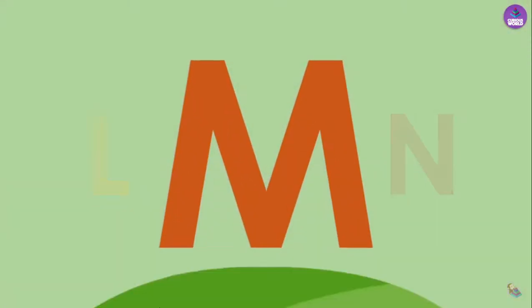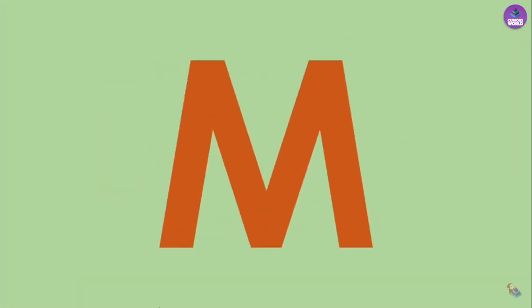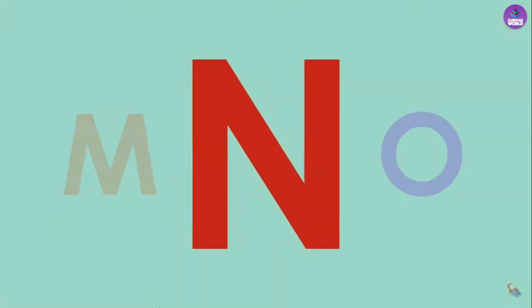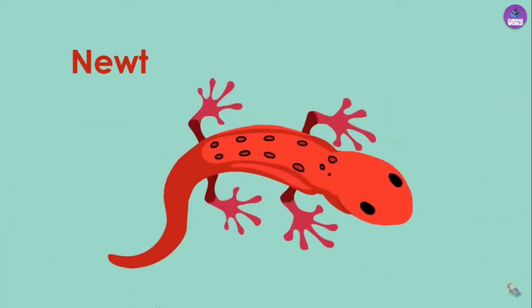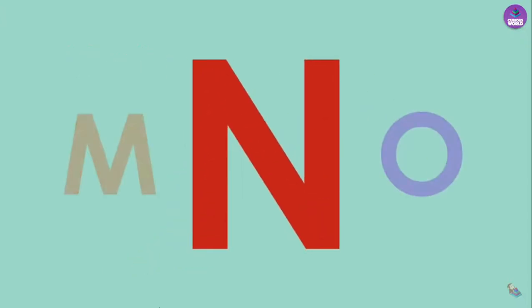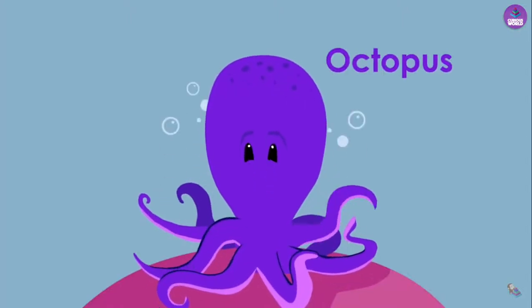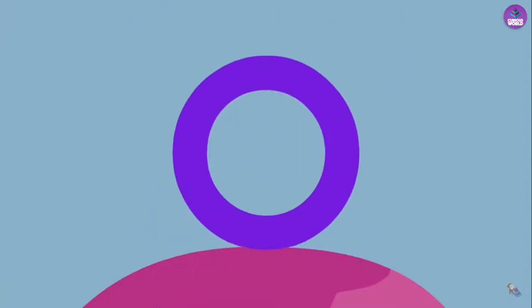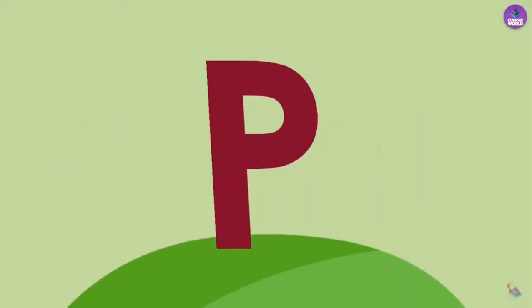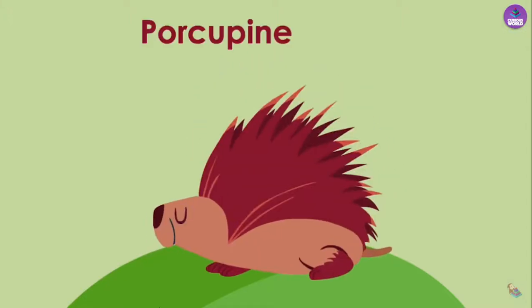M is for Monkey. M. N is for Newt. N. O is for Octopus. O. P is for Porcupine. P.